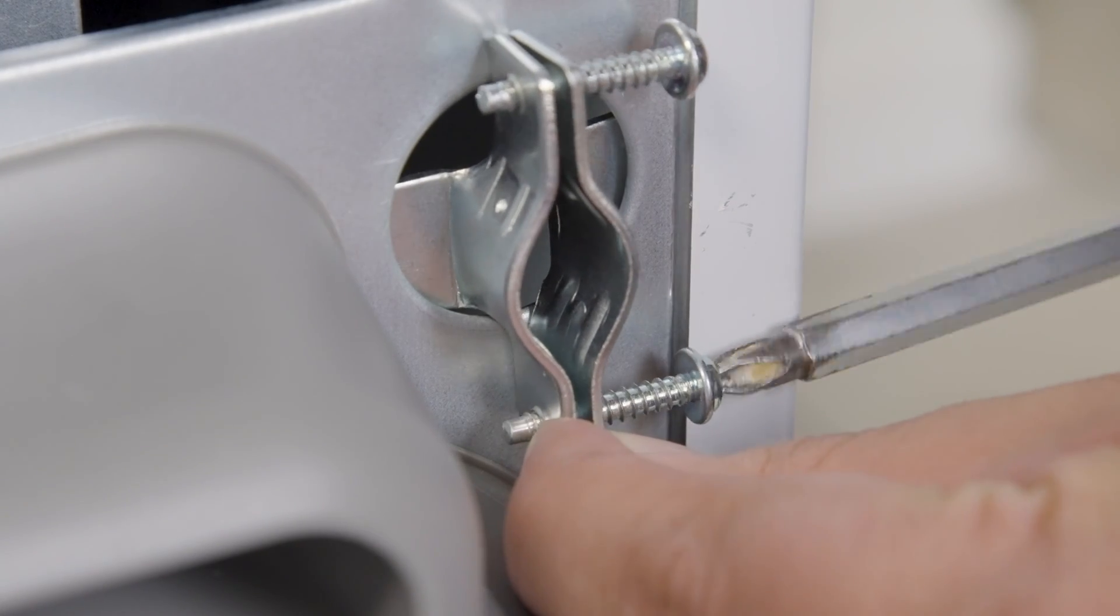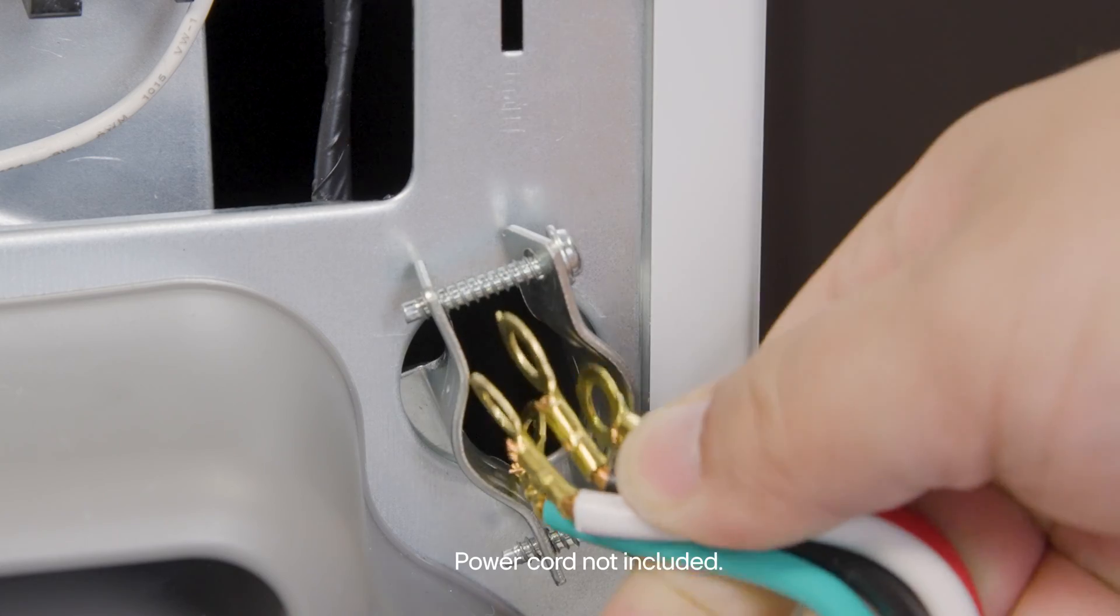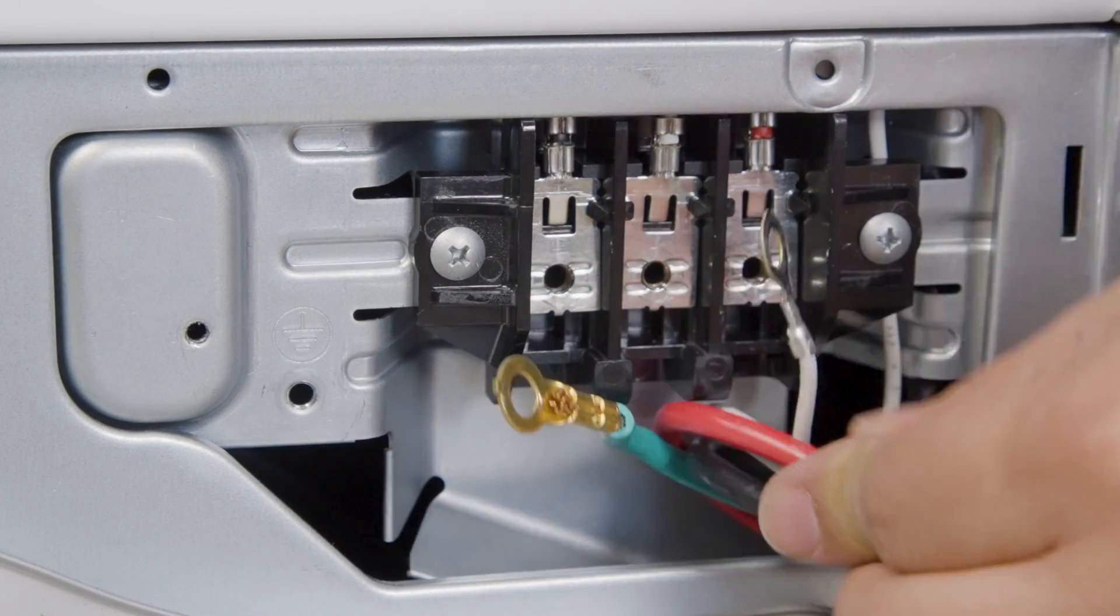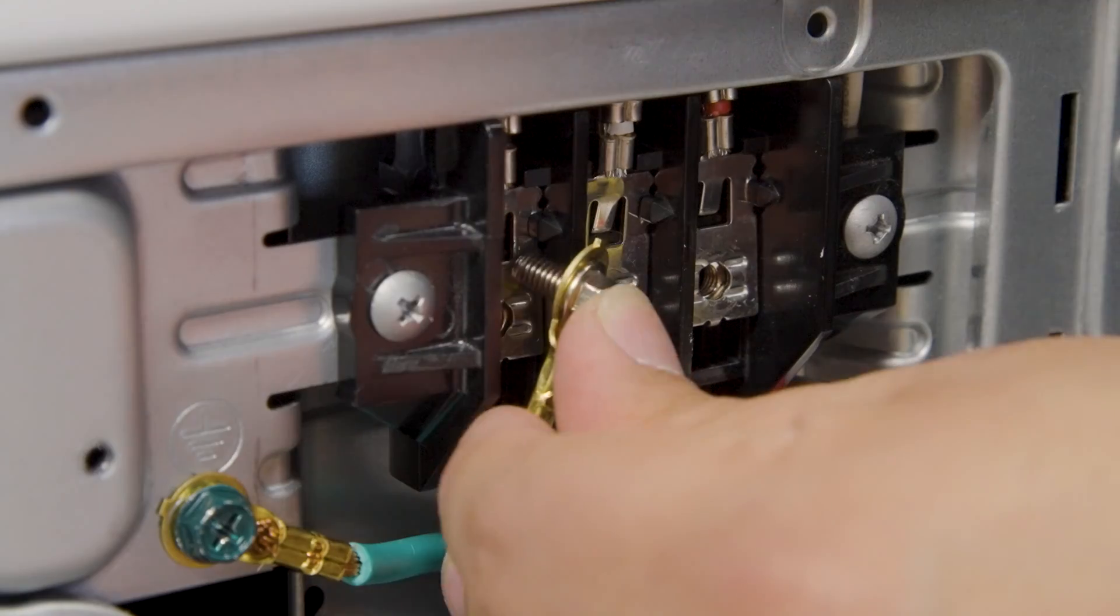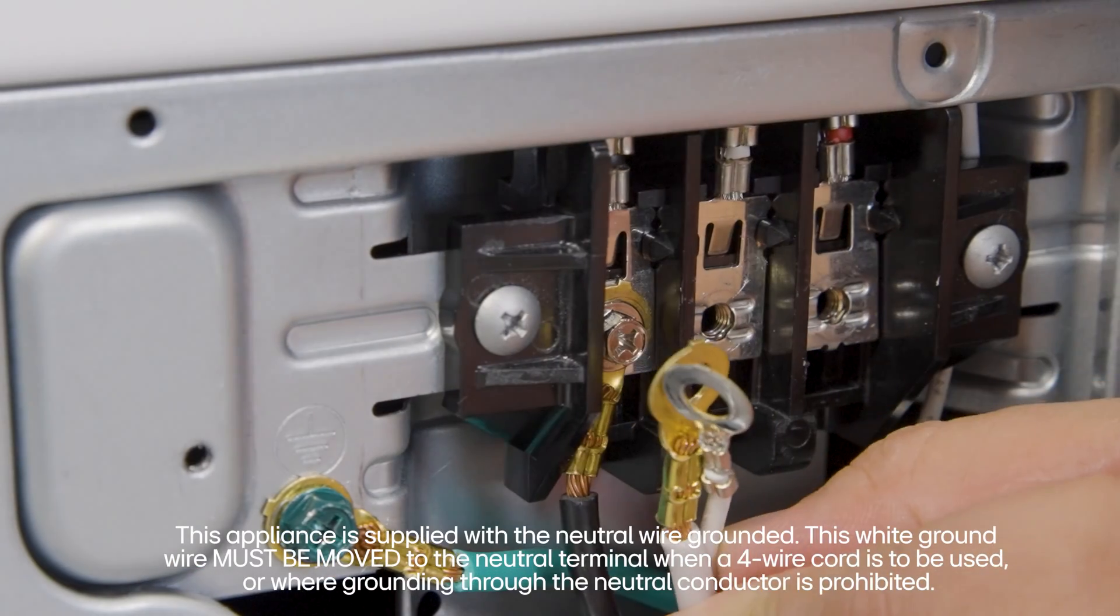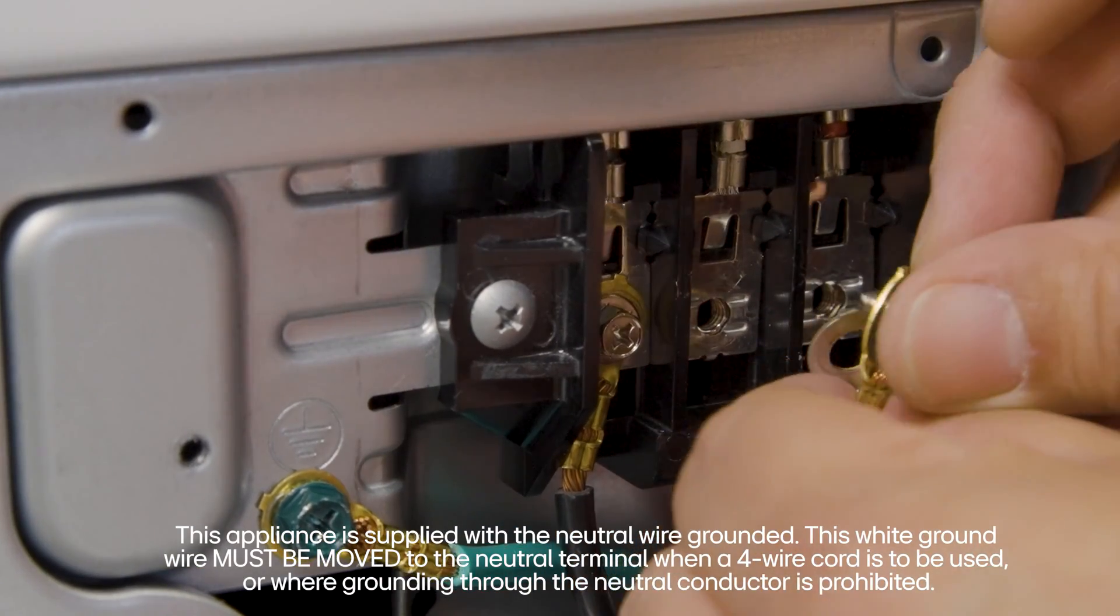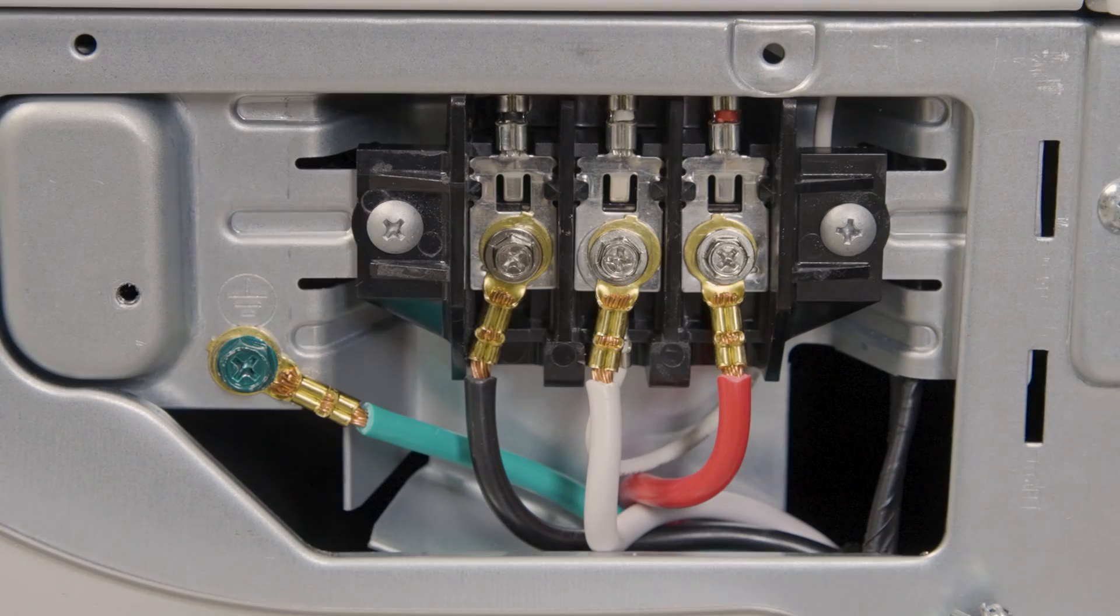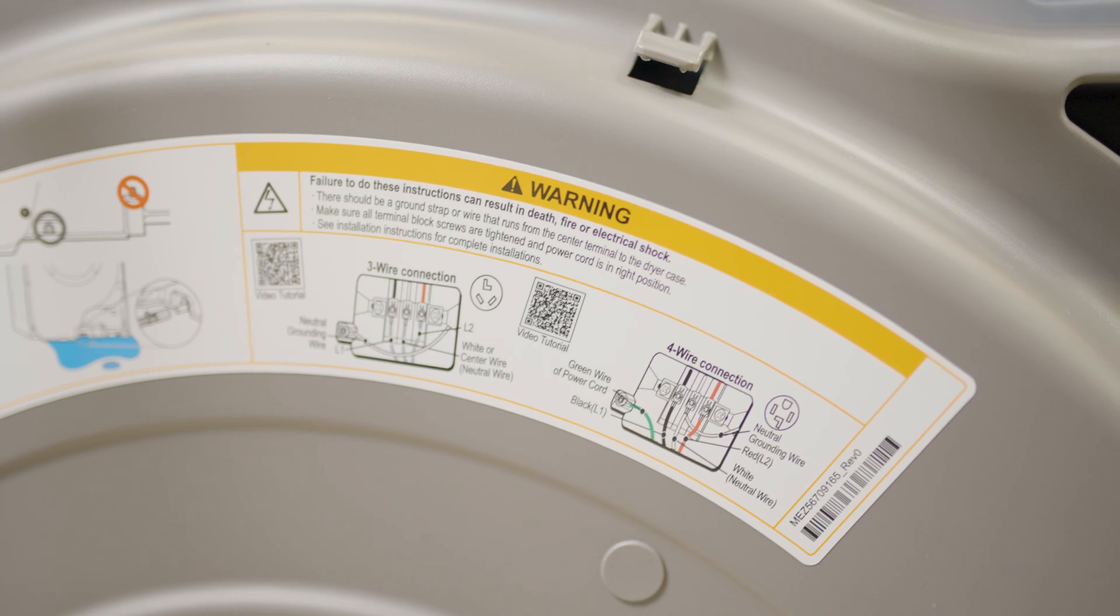I'm going to keep it loose for now so it's easier to get the cord through, and then I'm going to tighten everything when I'm finished. I like to go in order when doing the wiring. So first I screw in the green ground wire, then the black wire. Next I take both white neutral wires, the one that came with the cord and the one that was on the dryer, and put them in the middle. And last I screw in the red wire. At the end it should look like this.